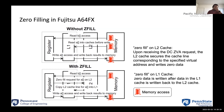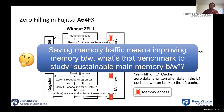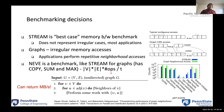Saving memory traffic means improving memory bandwidth, and the benchmark that instantly comes to mind for studying sustainable main memory bandwidth is STREAM. We want to see what the impact on STREAM would be, and although we know it oversimplifies application scenarios, it would be interesting to see how much better STREAM can get when you apply Z-fill.